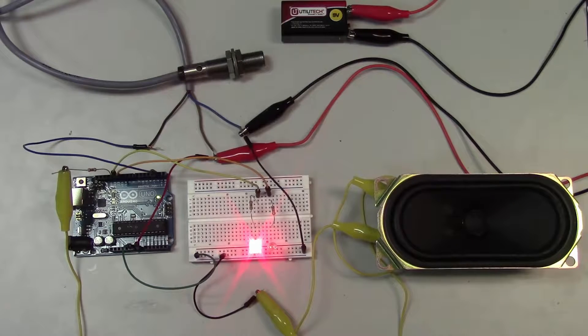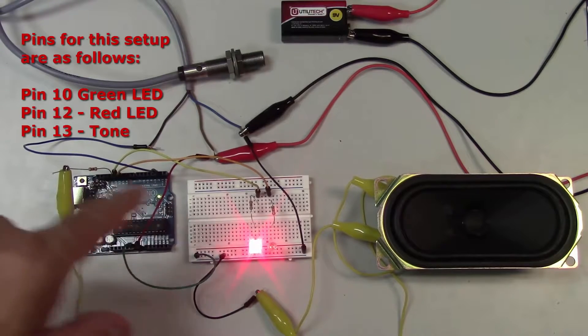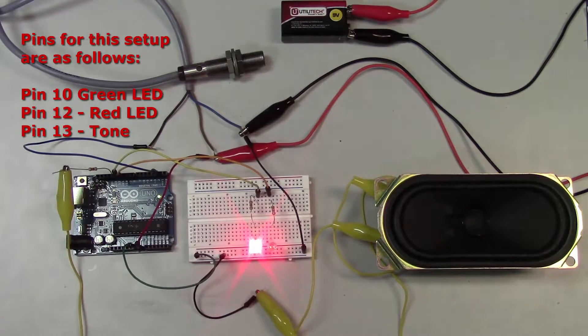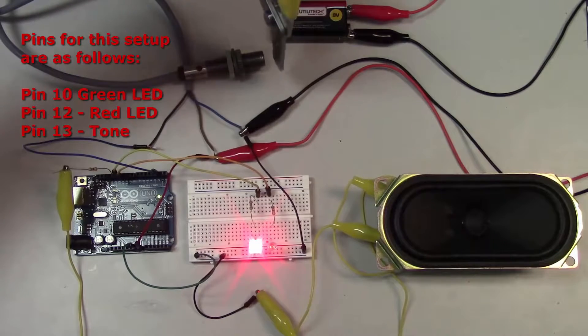So I wrote some code to handle this. As far as my outputs go, I'm using pins 11 and 12 to output to LEDs. I've got one red LED and one green LED. My green LED tells me when the sensor is activated and my red LED tells me when it's not activated.